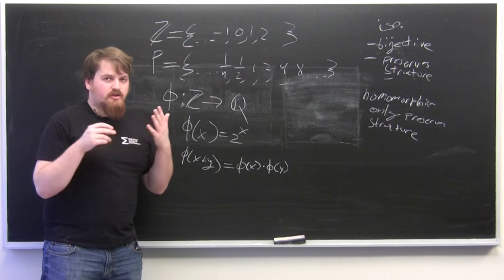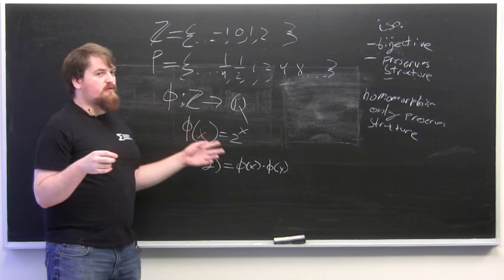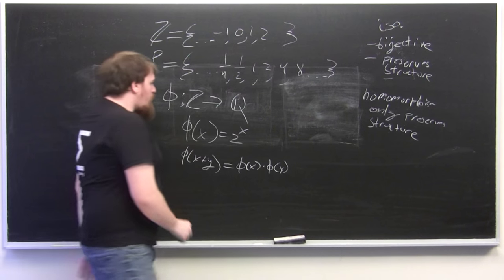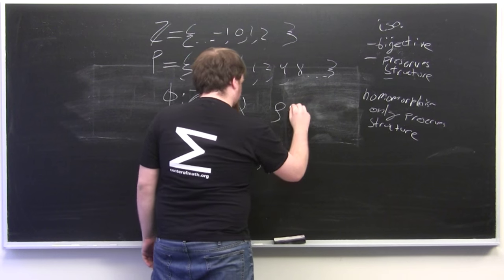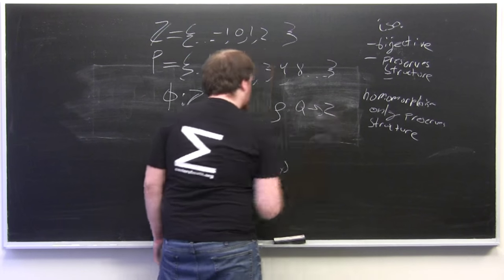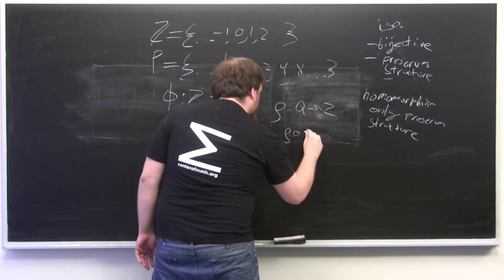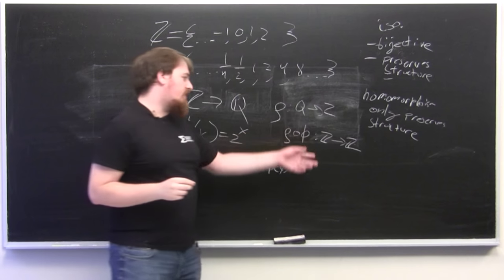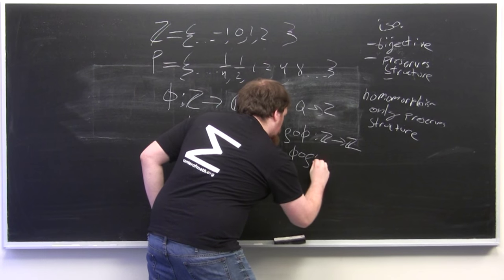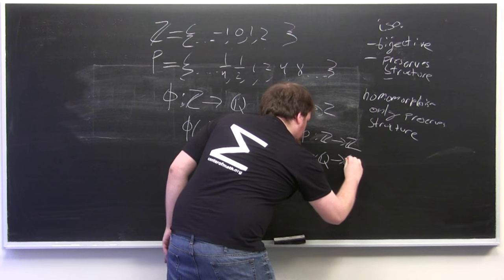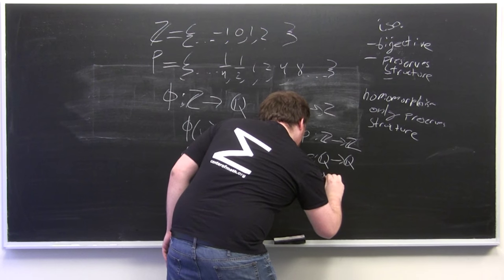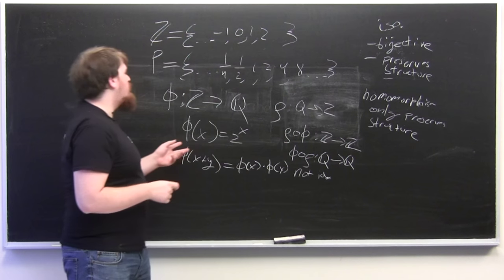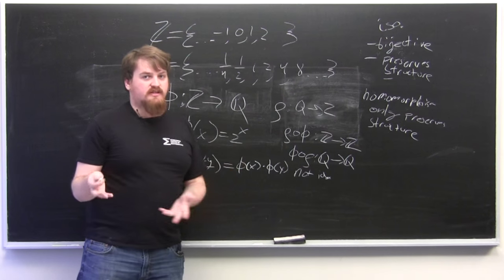Note that you can make a function which composes with phi and sends everything back to Z. However, this isn't a proper inverse because if you compose it the other way around. If we call this thing rho, then rho of phi of Z will be Z. But phi of rho won't send everything in Q because phi can only send things to powers of two and so anything which has phi on the outside can only send things to powers of two.